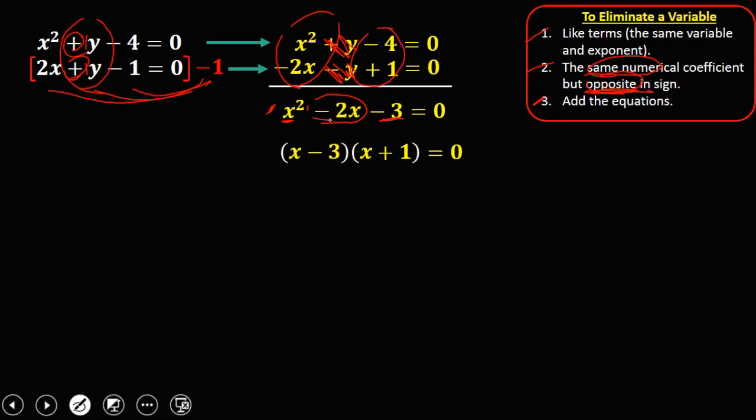Then equate this factor to 0, so x minus 3 equals 0, solve for x, transpose this negative 3, so x now is positive 3. And the other one, x plus 1 equals 0, transpose this positive 1, so x now is negative 1. So these are the values for x, positive 3 and negative 1.